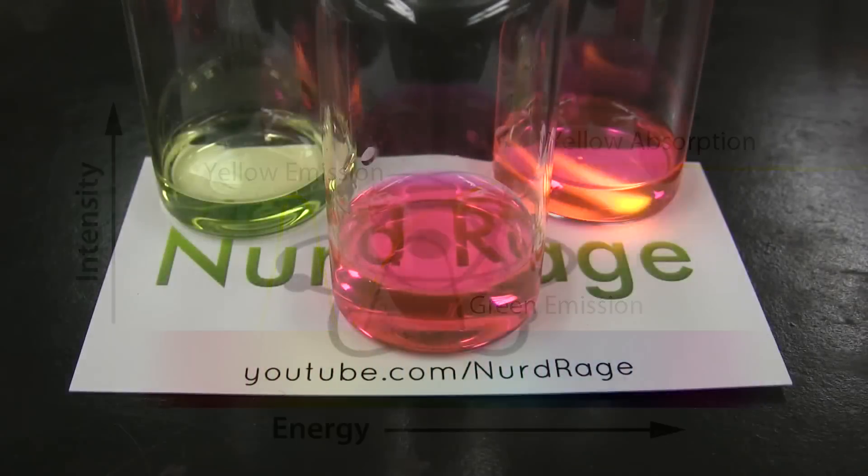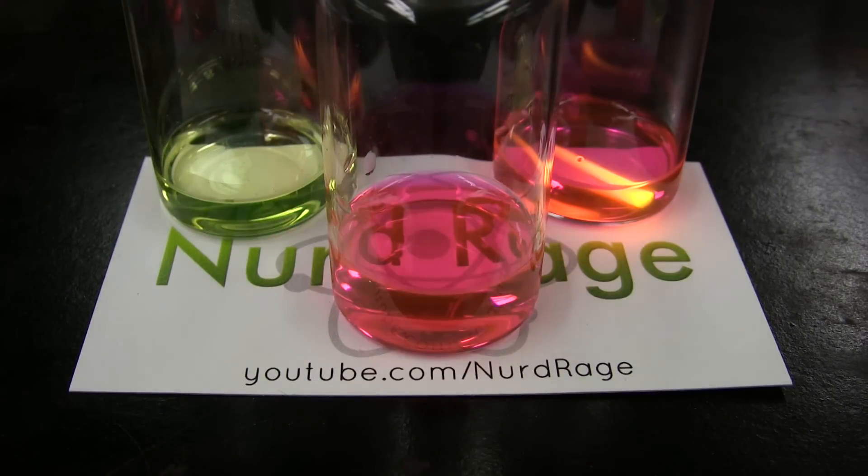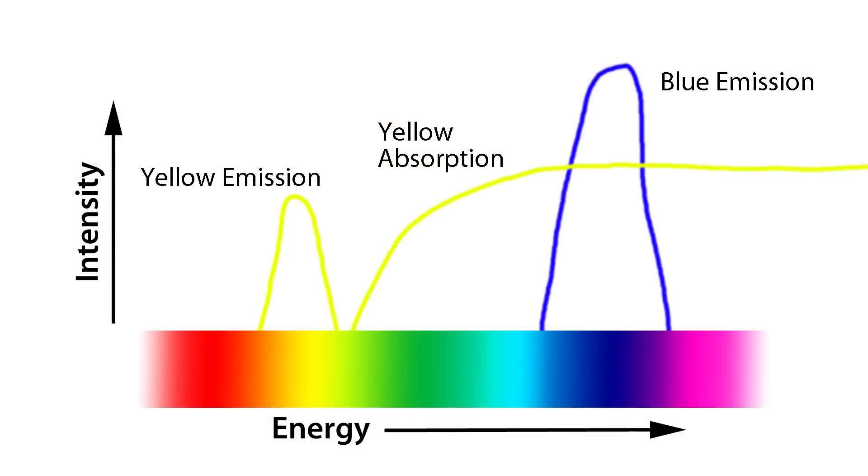So when mixing fluorescent dyes the final result depends on how much their absorptions and emissions overlap. In the previous blue and yellow dye demonstration the yellow dye does absorb a bit of blue but not enough to totally block it.